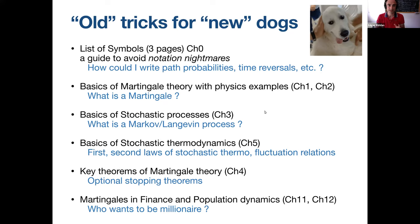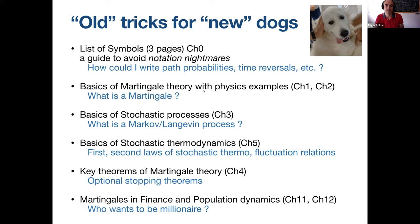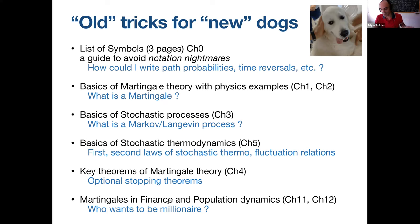First, these are 'old tricks for new docs' — what a new student can learn from the review. We have a list of symbols, three pages of notation which can help you write your thesis. We cover basics of martingale theory with examples applied in physics, basics of stochastic processes, Markov-Langevin dynamics, stochastic thermodynamics including the first and second laws, and classical applications in finance and population dynamics.